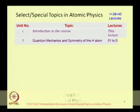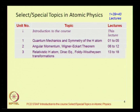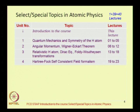In Unit 1, I will discuss the quantum mechanics and symmetry of the hydrogen atom. In Unit 2, I will discuss angular momentum algebra and the quantum mechanics of angular momentum and the Wigner-Eckart theorem. In Unit 3, we will study the relativistic hydrogen atom, the Dirac equation, and the Foldy-Wouthuysen transformations. In Unit 4, we will go over to many-electron atoms and talk about the self-consistent field and the Hartree-Fock method of getting many-electron wave functions.